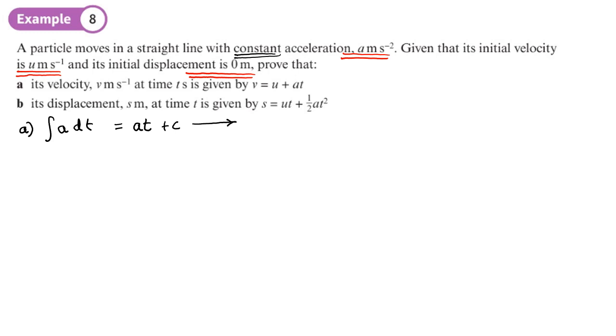But then it says given that its initial velocity is u and its initial displacement is zero. So basically when t equals zero, the initial velocity is u, so v equals u. Now when we worked out this at plus c, what did we do? Well, we worked out the velocity, and this question says that when t is zero, v equals u.